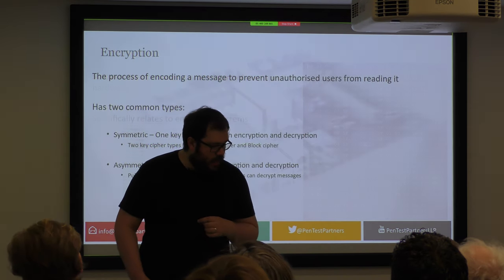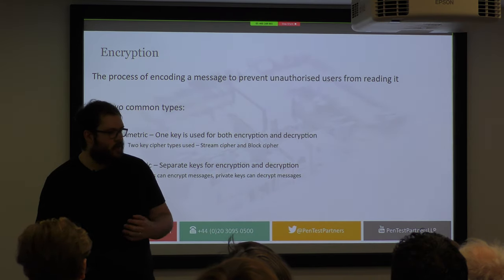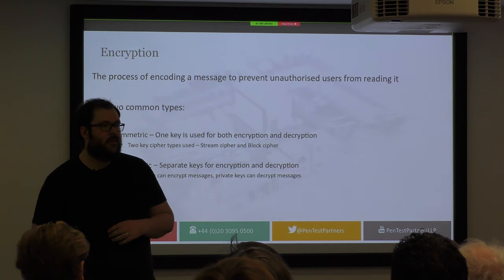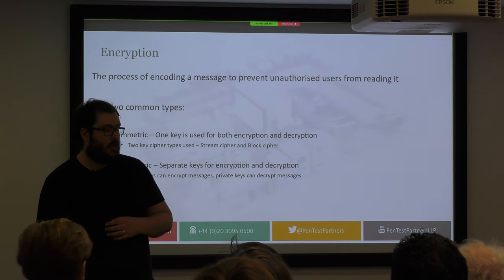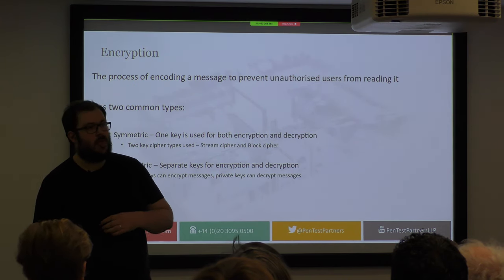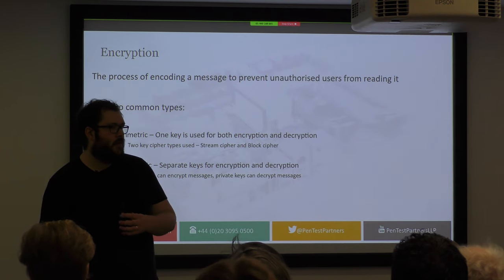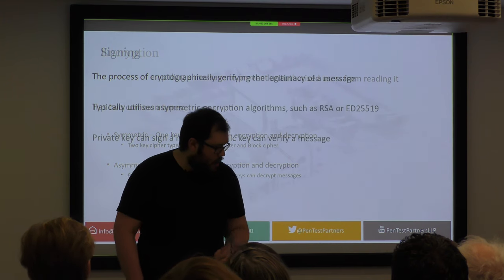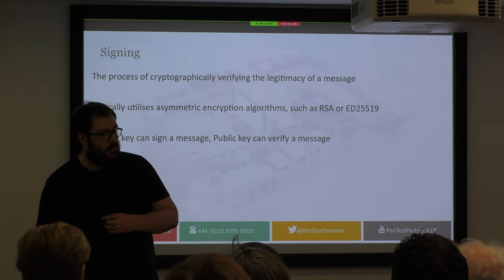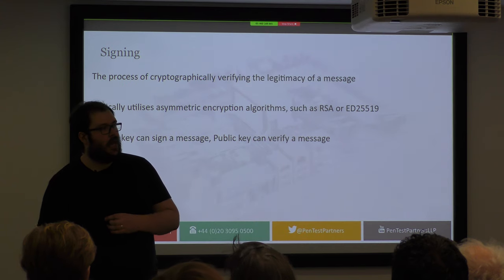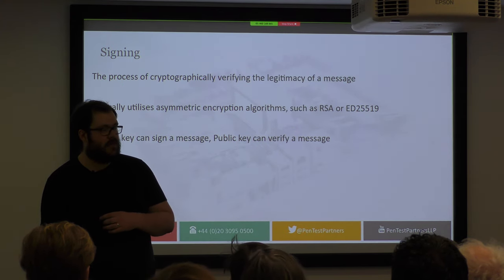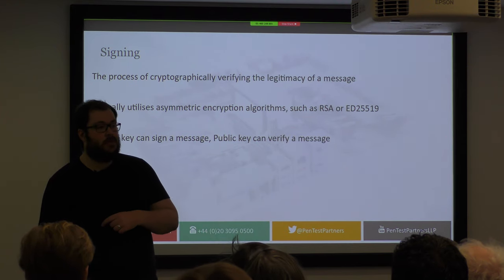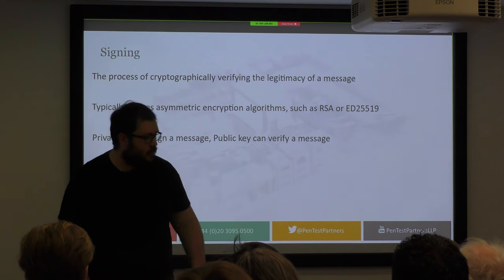We have encryption, which is a well-known topic, with a symmetric and asymmetric version. Symmetric uses the same key to encrypt and decrypt something. Asymmetric uses a private key and a public key, where the public key can encrypt something and the private key can decrypt it. Signing is the other side of asymmetric encryption, where a private key lets a user verify a specific message, and the public key can verify that message.